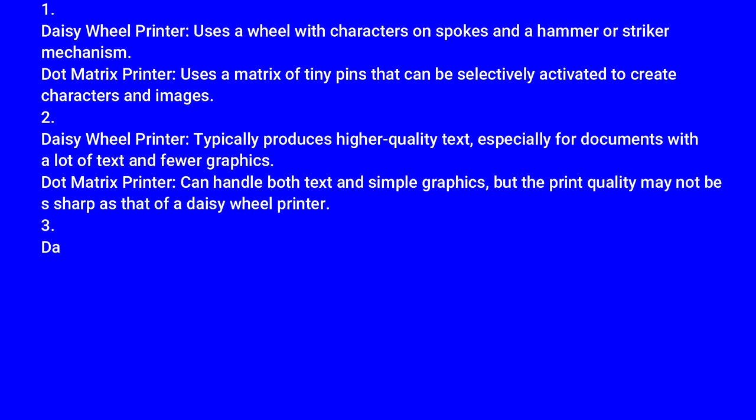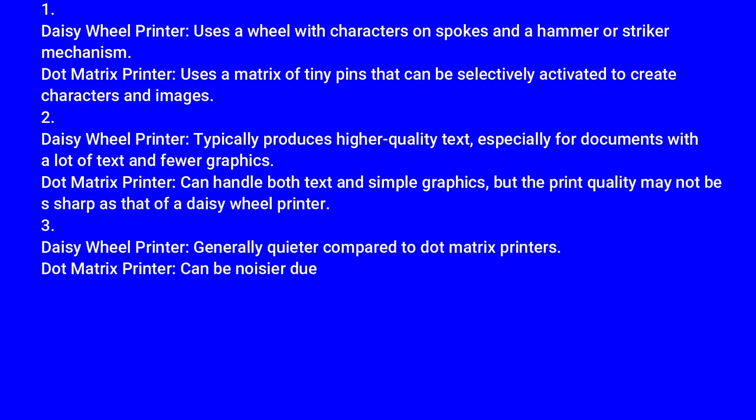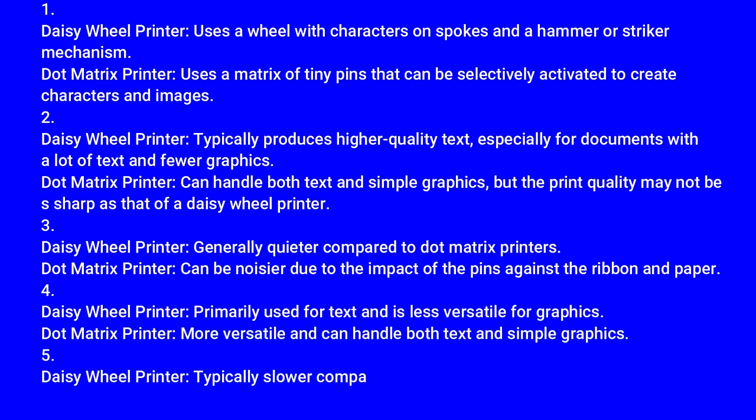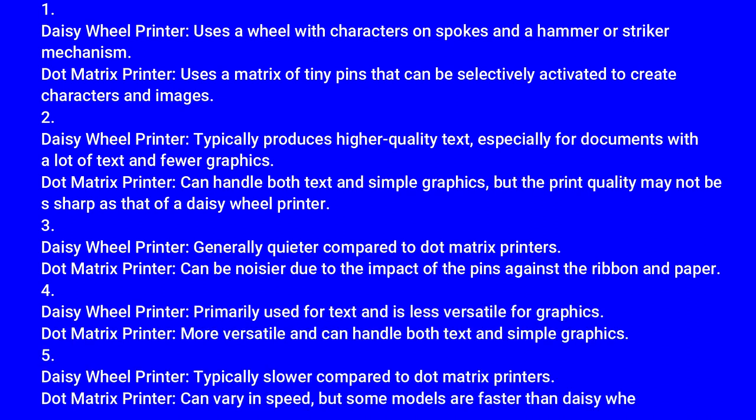Differences between daisy wheel and dot matrix printers: A daisy wheel printer uses a wheel with characters on spokes and a hammer or striker mechanism, while a dot matrix printer uses a matrix of tiny pins selectively activated to create characters and images. The daisy wheel typically produces higher quality text, especially for documents with lots of text and fewer graphics, whereas the dot matrix can handle both text and simple graphics but with less sharpness.